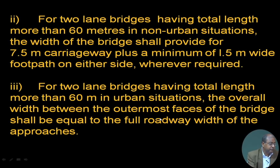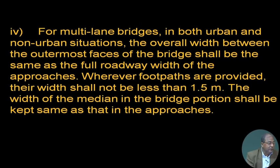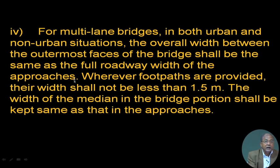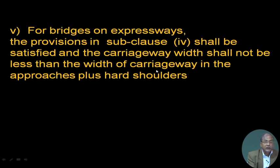For multi-lane bridges in both urban and non-urban situations, the overall width between the outermost faces shall be the same as the full roadway width of the approaches. Wherever footpaths are provided, their width shall not be less than 1.5 meters. The width of the median in the bridge portion shall be kept the same as in the approaches. For bridges on expressways, the carriageway width shall not be less than the carriageway width of the approaches plus hard shoulders.